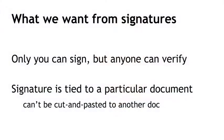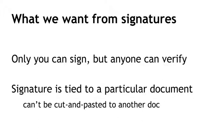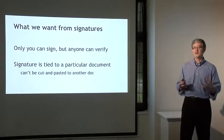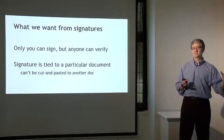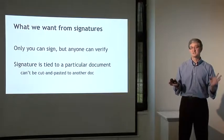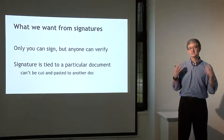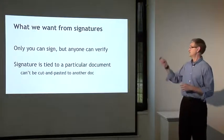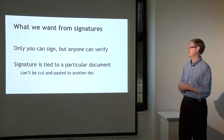What we want from signatures is two things. First, just like an idealized paper signature, only you can make your signature, but anyone who sees your signature can verify that it's valid. Second, the signature is tied to a particular document, so somebody can't take your signature and snip it off one document and glue it onto another. The signature signifies your agreement or endorsement of a particular document. So the question is, how can we build this in digital form using cryptography?